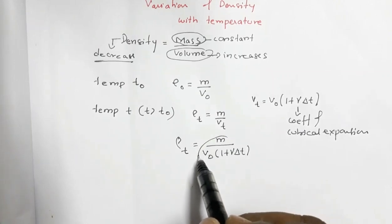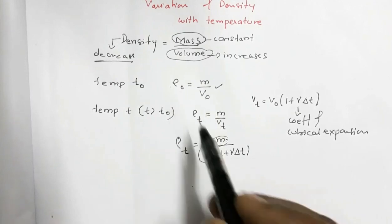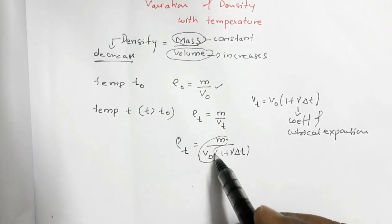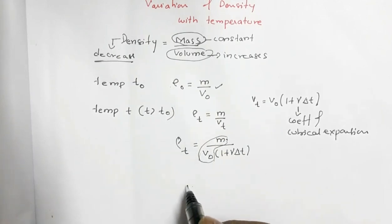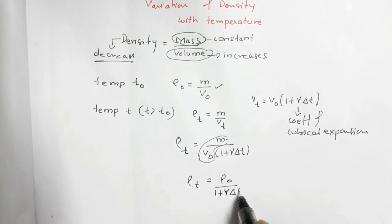Now this quantity M by V0, it is equal to ρ0, so this M by V0 times 1 plus gamma delta T. So M by V0 can be replaced by ρ0, so ρT is equal to ρ0 by 1 plus gamma delta T.